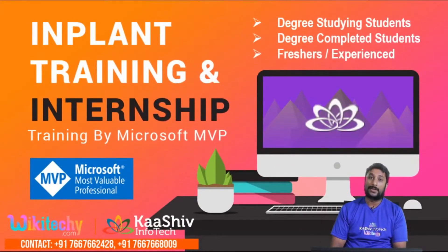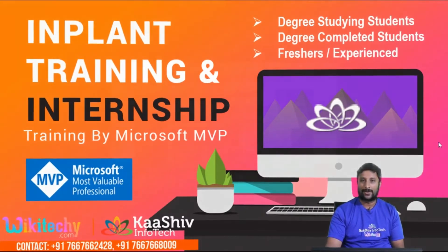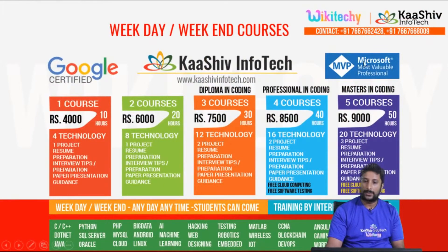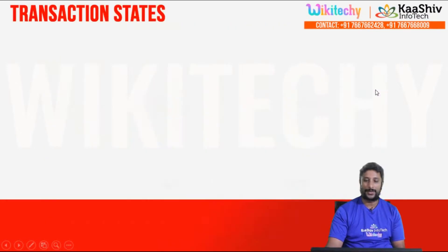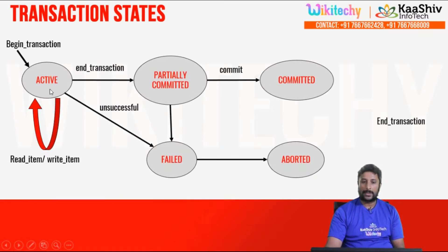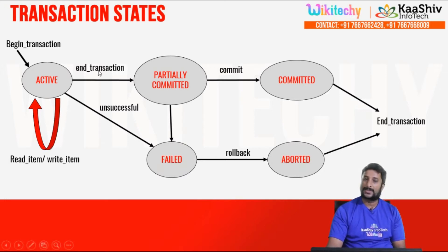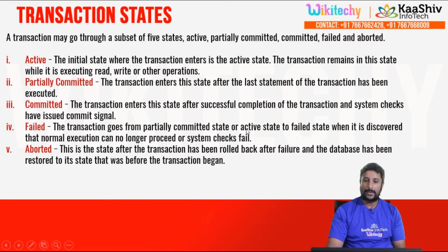Kashiv Info is the company — in-plant training, internships for students. Degree complete and freshers can contact us. Now the transaction states: one transaction is active, partly committed, final commit, in-transaction. Active transaction, roll back — these are the transaction states. You can see the definition of the transaction.